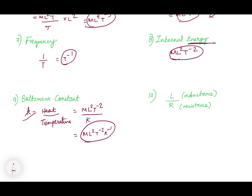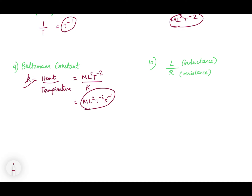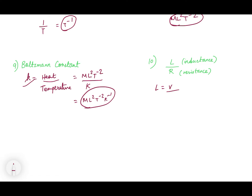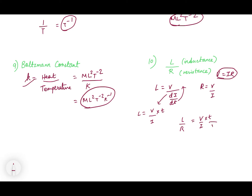For L/R — inductance over resistance — you don't really need to find their dimensions separately. Inductance has formula L = V/(dI/dt), and resistance R = V/I from Ohm's law. So L/R = [V/(dI/dt)] / [V/I]. Writing it out: V by I by I into T — V and V cancel, I and I cancel — and you are left with T. The dimension of L/R is simply T.